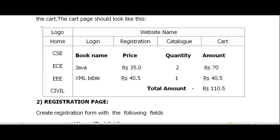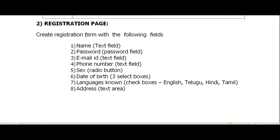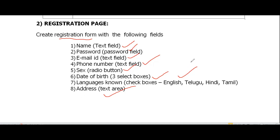The next page is the registration page, which is a form containing: name (text field), password (password field), email (text field), phone number (text field), gender (radio button), date of birth (type=date or select/option), languages (checkboxes), address (textarea), and finally submit and reset buttons.